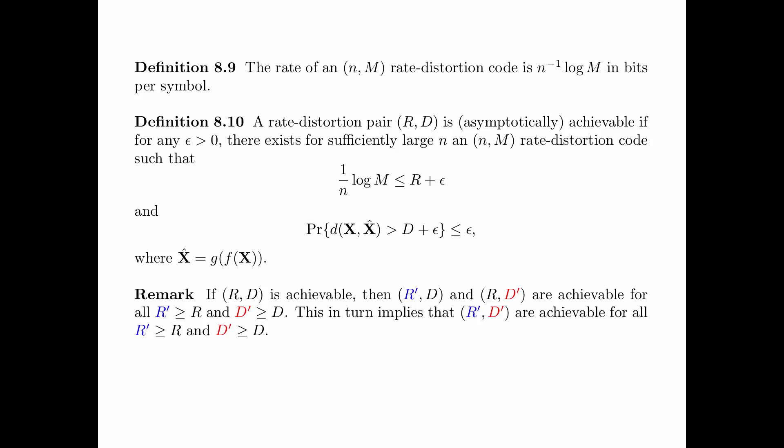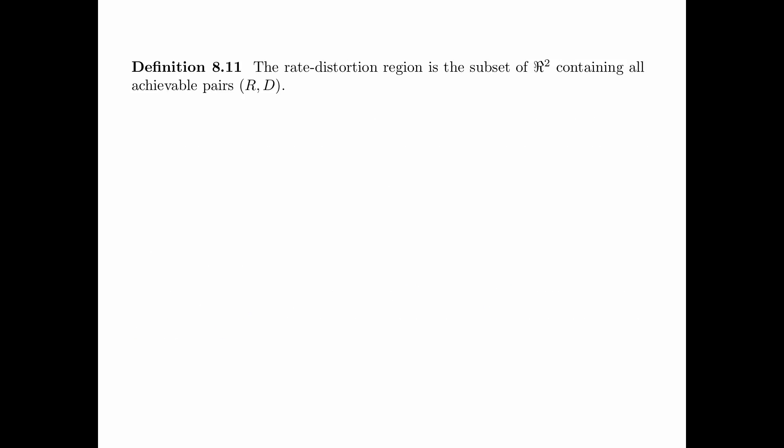Here is a remark. If a pair (R, D) is achievable, then (R', D) and (R, D') are achievable for all R' greater than or equal to R and D' greater than or equal to D. This means that if a pair (R, D) is achievable, then (R', D') is achievable for all R' greater than or equal to R and D' greater than or equal to D. The rate-distortion region is the set of all achievable pairs (R, D) in the two-dimensional Euclidean space.